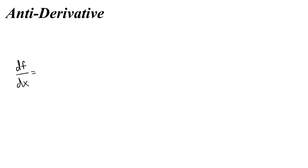In this video we're going to talk about how to take the antiderivative, which is the reverse process of taking the derivative. Normally you would start with a derivative and then try and work backwards to find some original function. If you knew that the derivative of f with respect to x was x squared, what was the original function f?